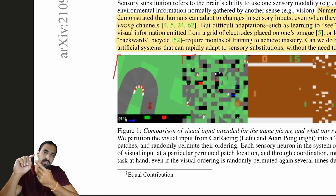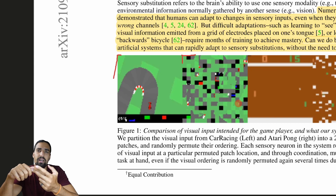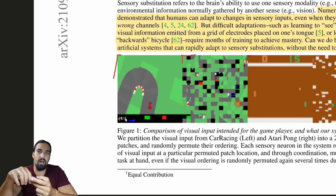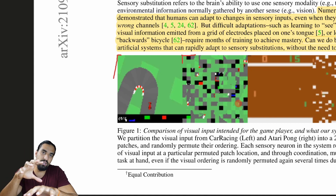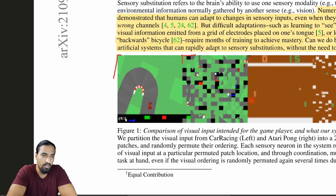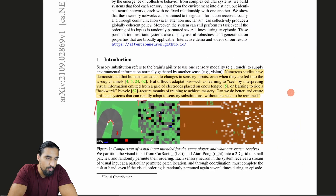How they managed to achieve this involves two components. The first component borrows ideas from the self-organization literature, and the second idea is to add permutation invariance — to bake it into the model — and that way they achieve this behavior.